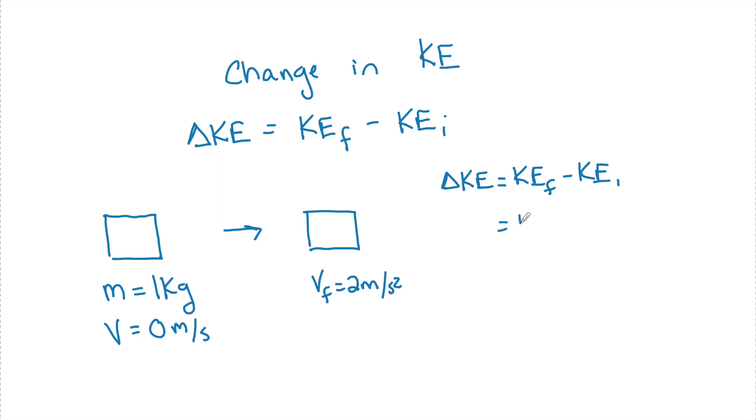So that's going to be KE final minus KE initial. So we have 1 half mv squared final minus 1 half mv squared initial. So we start to substitute in now. 1 half, 1 kilogram, its final speed was 2 meters per second. I just realized I had a little error over here.